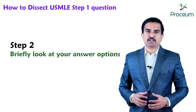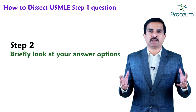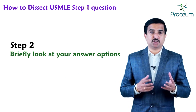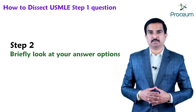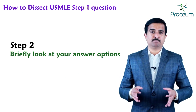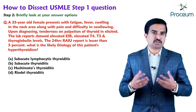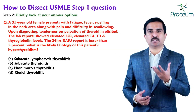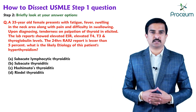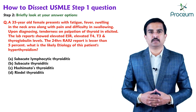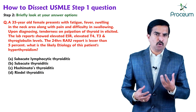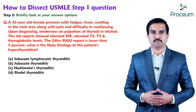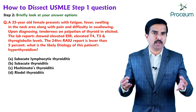The second important step is to briefly look at your answer options. A lot of students skip this step, but it is really important. It tells you the depth to which you need to understand what is going on in the stem, and it can give you more clues about what the stem will be about, especially if the last sentence is very vague.